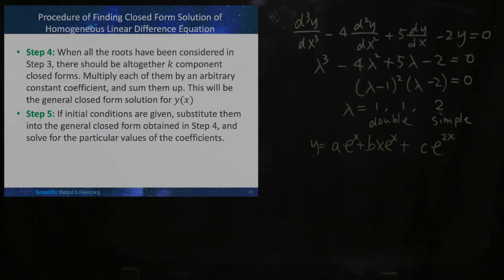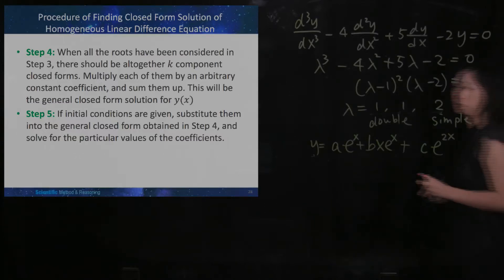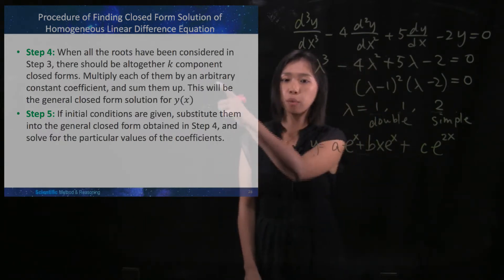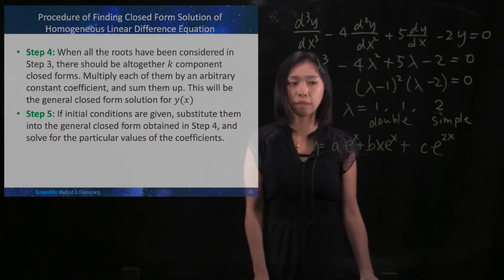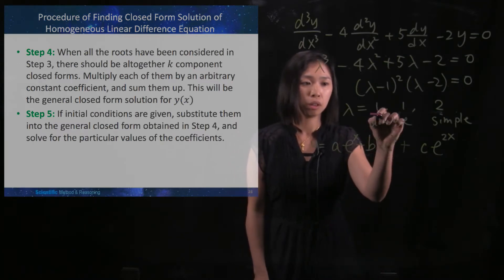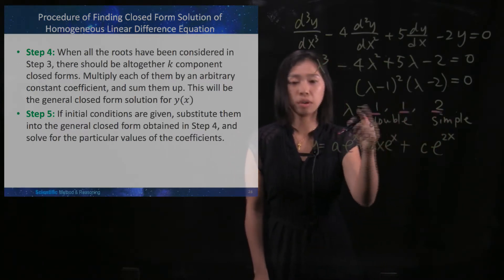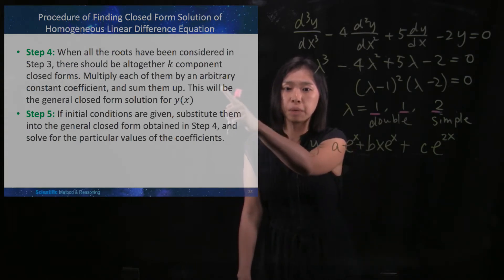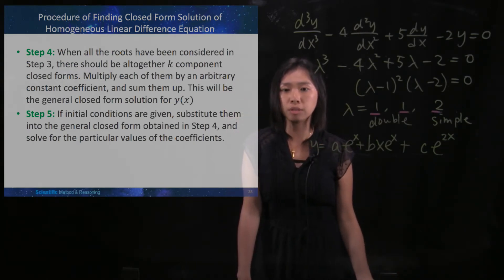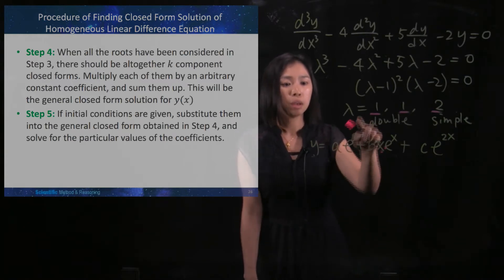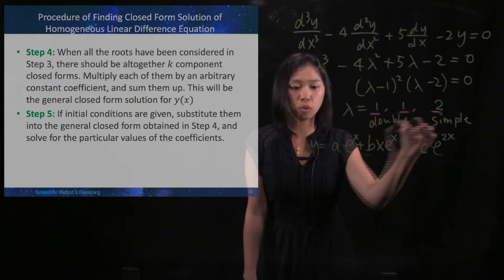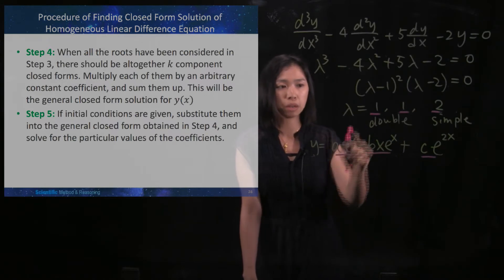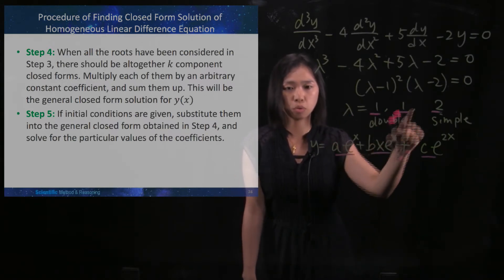In solving homogeneous linear differential equations, we are moving to the fourth step. When all the roots have been considered in step three — in this example we got three roots — there should be altogether k components in closed form, because one component corresponds to one root.